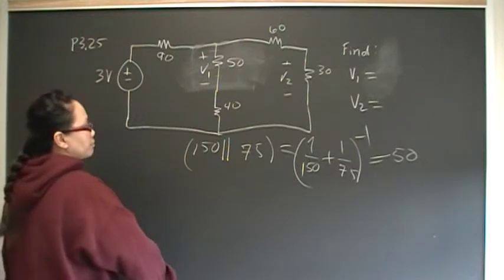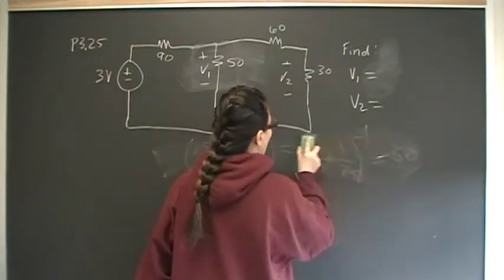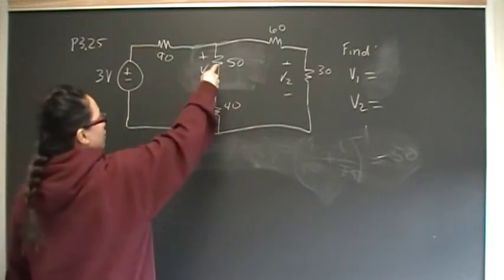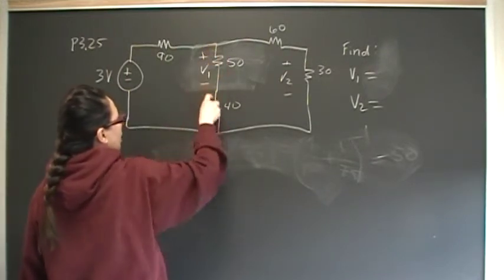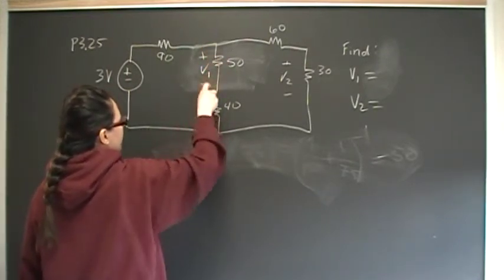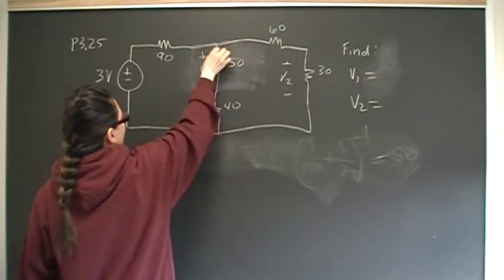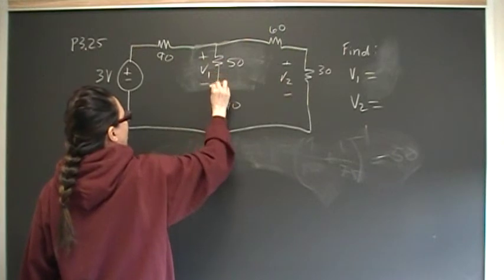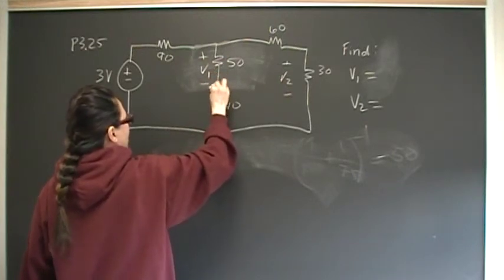What we've replaced with still has a voltage drop of V1. So now, what I'm going to do is I see that my V1 is really going to, over here, across here, I have a series circuit.